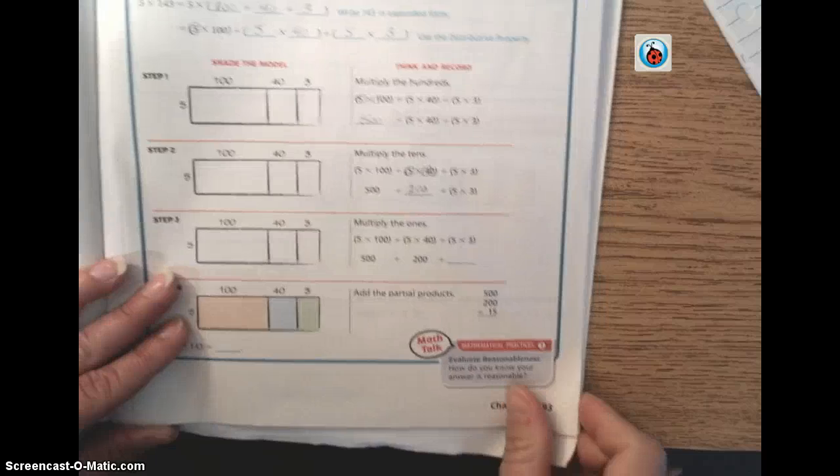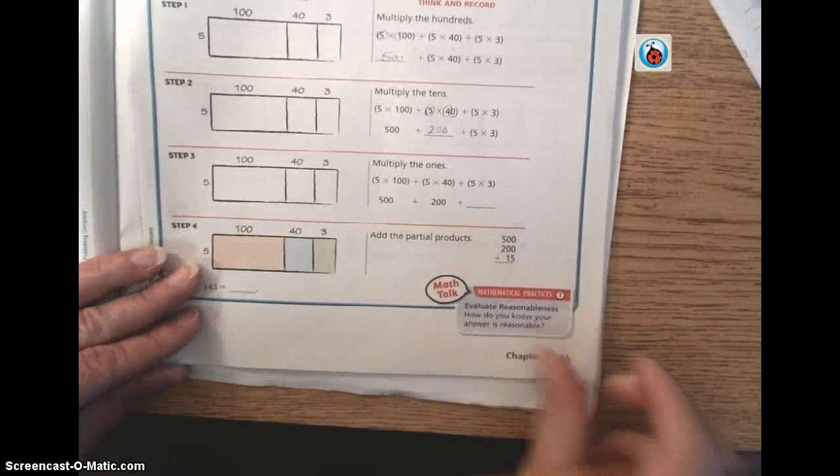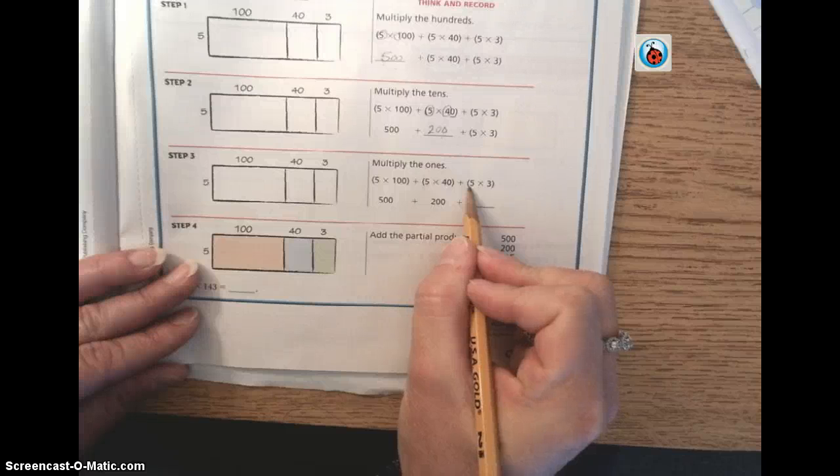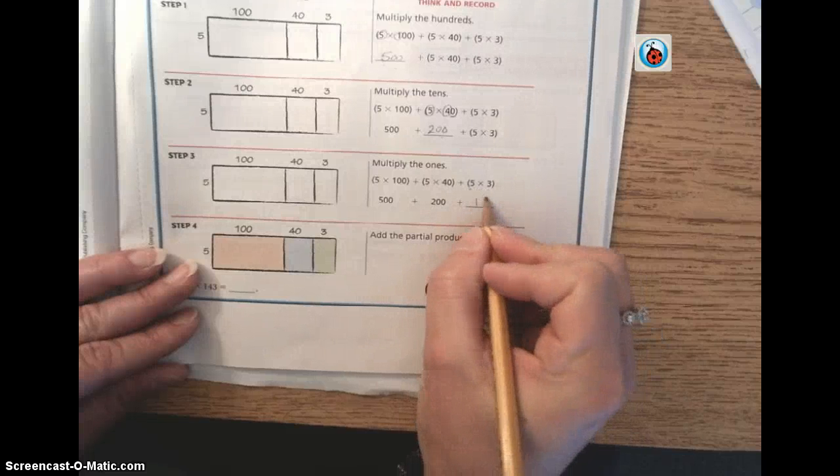And then our last step is the ones place, and in the ones place, we know mental math, hopefully we know our math facts, and we know that 5 times 3 is 15.